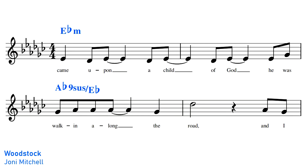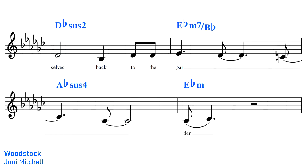For example, Joni Mitchell's Woodstock is in Eb minor, but until the end of the first chorus, the whole song is actually pentatonic. In other words, until the end of the chorus, the song doesn't touch the sixth degree of the scale in its chords or melody, meaning that we're not really in Dorian or natural minor — we're just in an ambiguous pentatonic minor. It's not until the end of the chorus that Joni's vocal finally lands on the Dorian sixth, the C natural, introducing the Dorian flavour to the song for the first time.